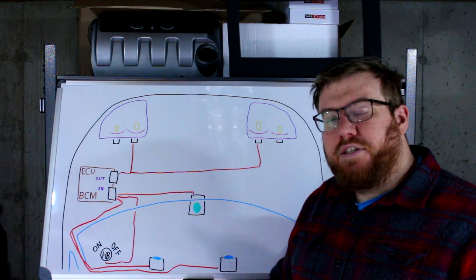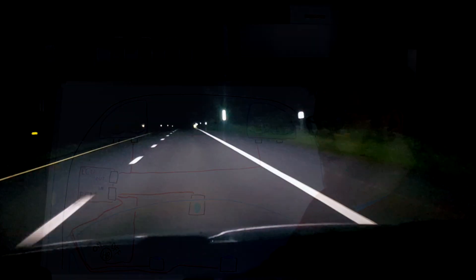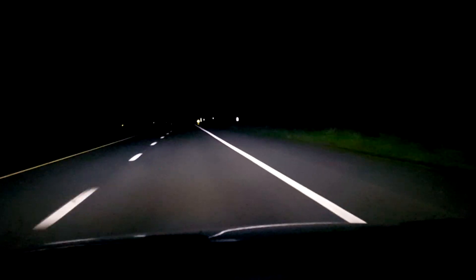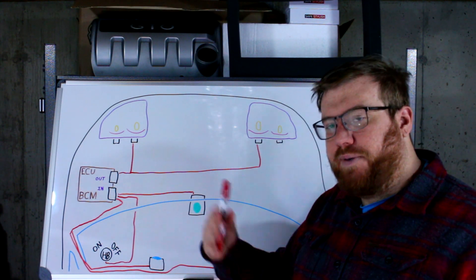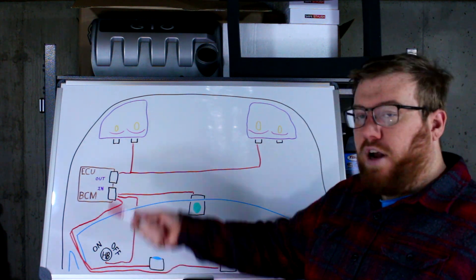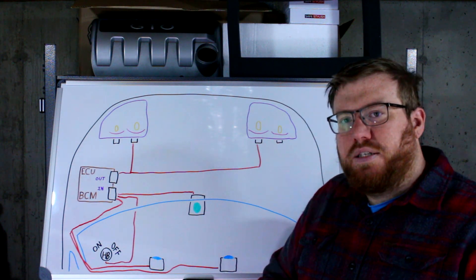Now one of the issues with the system that will eventually get fixed as these computers get smarter is that some very reflective signs reflect back so much light from your own lights that it thinks that it's an oncoming car and will actually shut off the high beams because of that. However, that might not be the worst thing in the world because you are sending your high beam light at that sign and it's reflecting back at you, so maybe it's for the best.